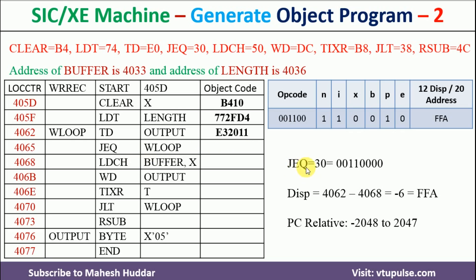Next is JEQ WLOOP. JEQ's opcode is 30. Most significant 6 bits are written. Neither immediate nor indirect, so N=1, I=1. No index addressing, X=0. E=0. Displacement = value of WLOOP (4062) minus PC (4068): since 4062 < 4068, compute 4068 − 4062 = 6, giving −6. Minus 6 falls in the PC-relative range, so P=1, B=0. Converting −6 to 2's complement gives FFA. Converting to hexadecimal gives 3B2FFA.